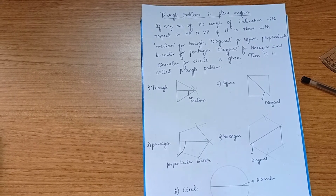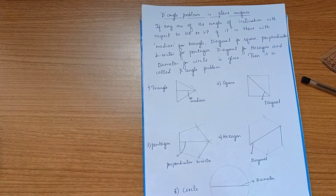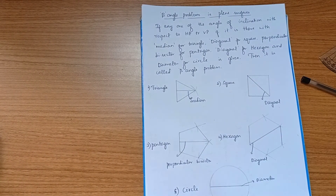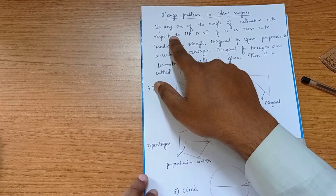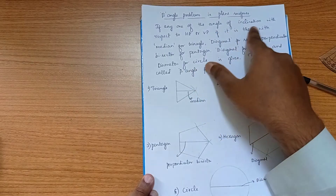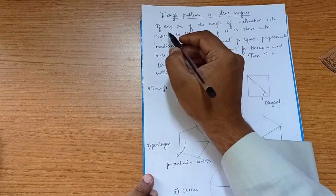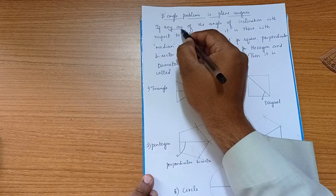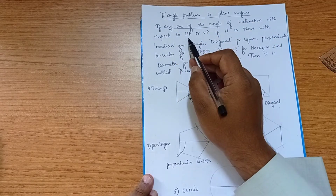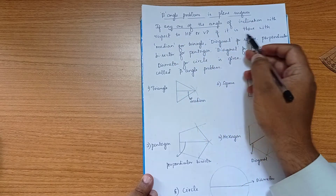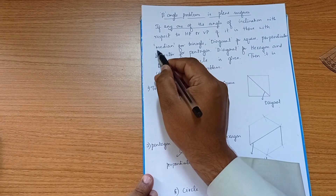Now we are going to learn the concept of beta angle problems in plane surfaces. How to identify whether a particular problem is a beta angle problem or not: if any one of the angles of inclination with respect to the HP or VP is given, you can take either the inclination to the HP or VP.